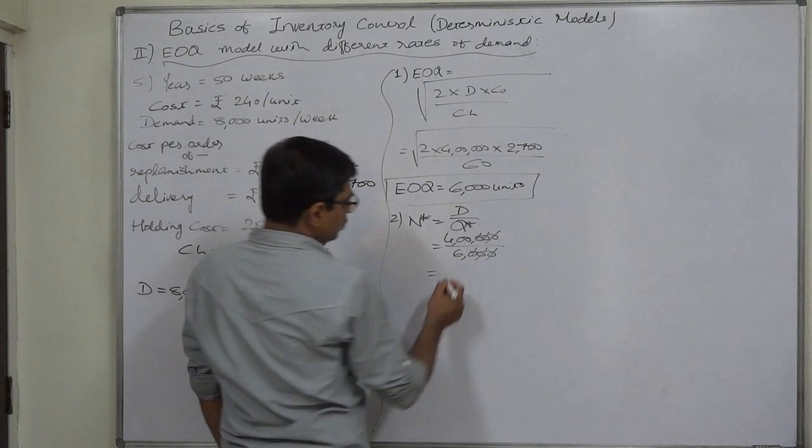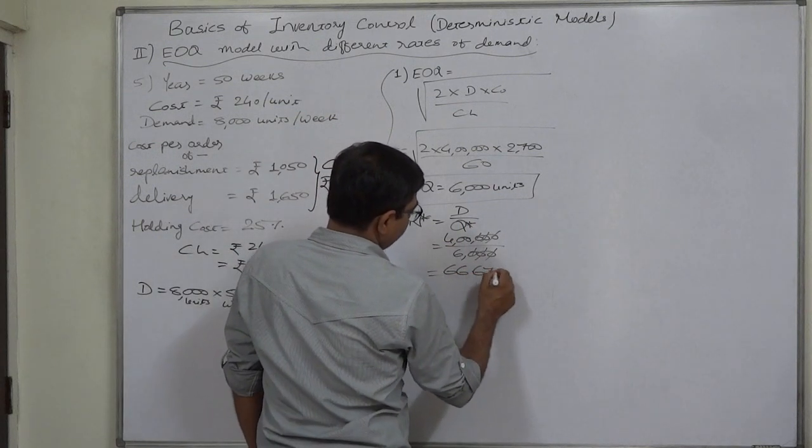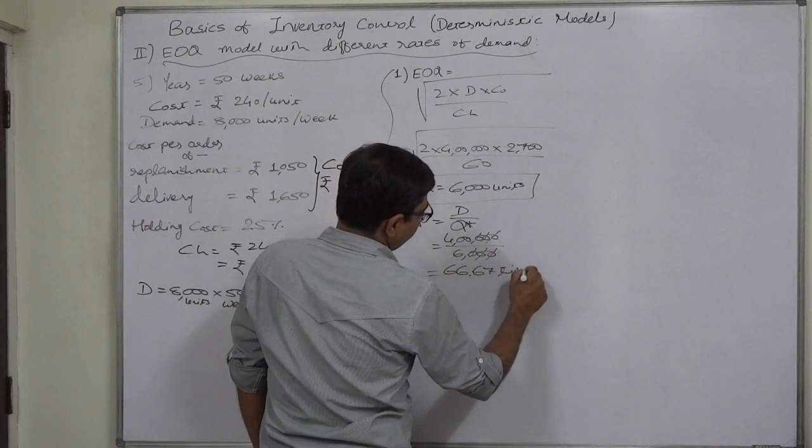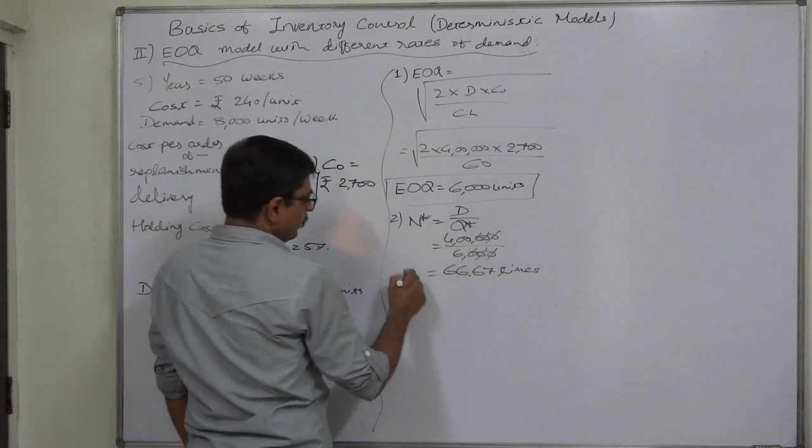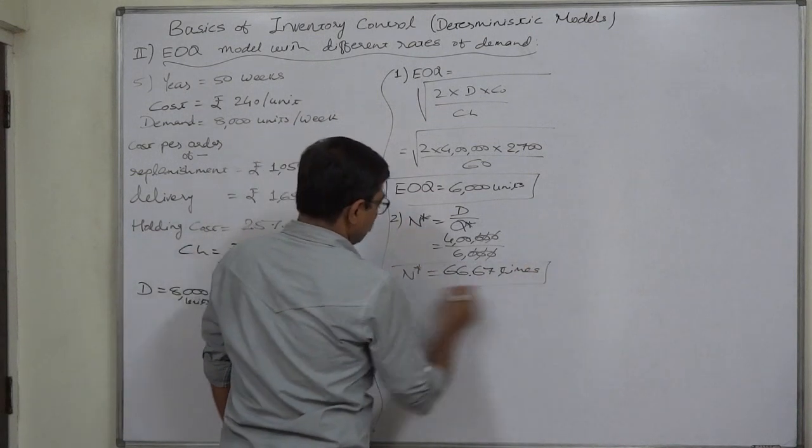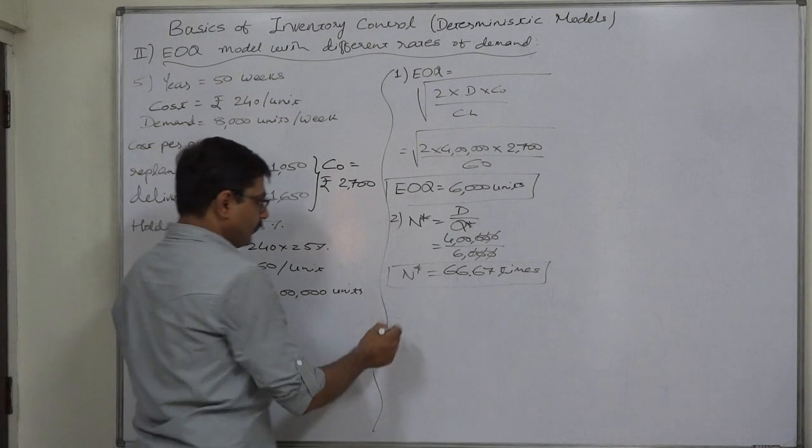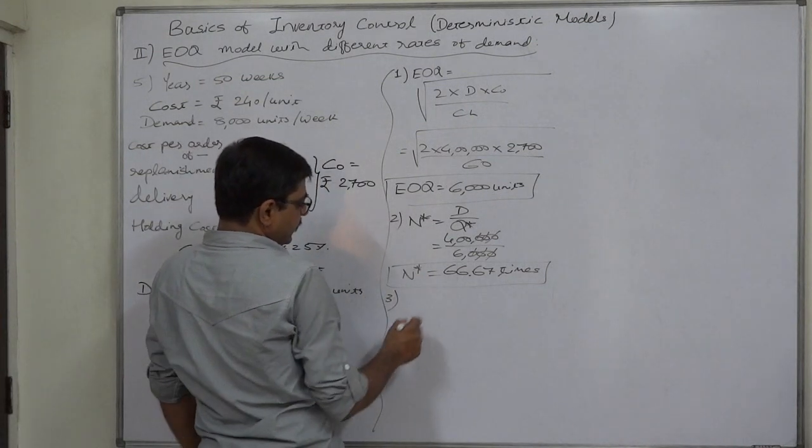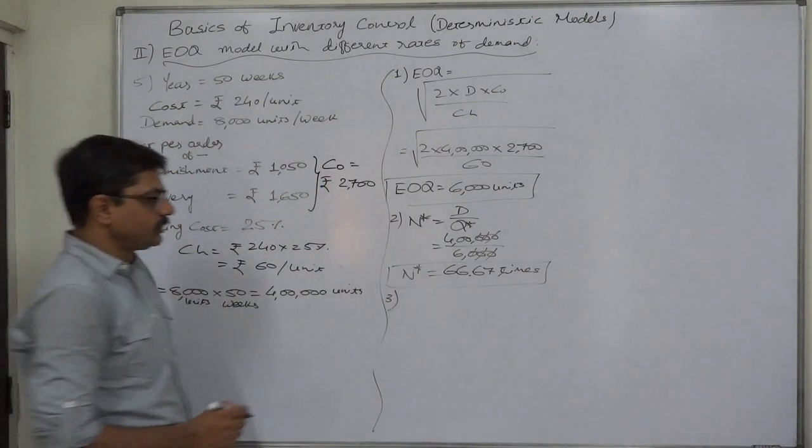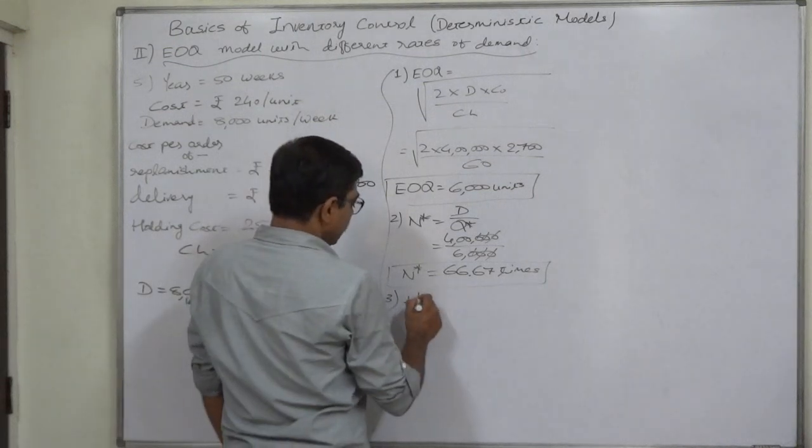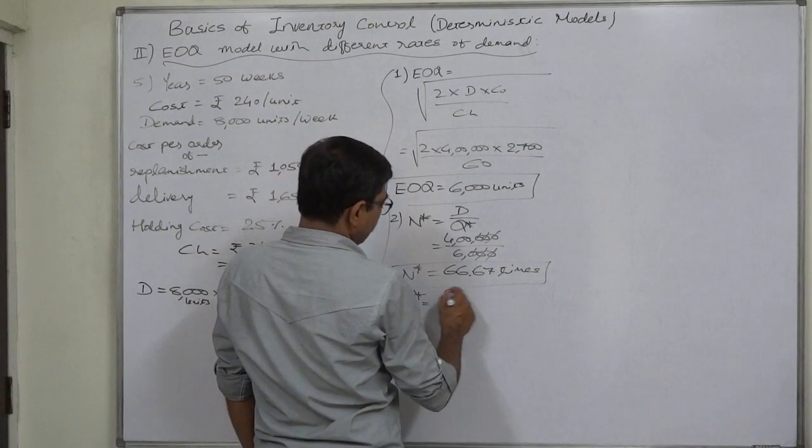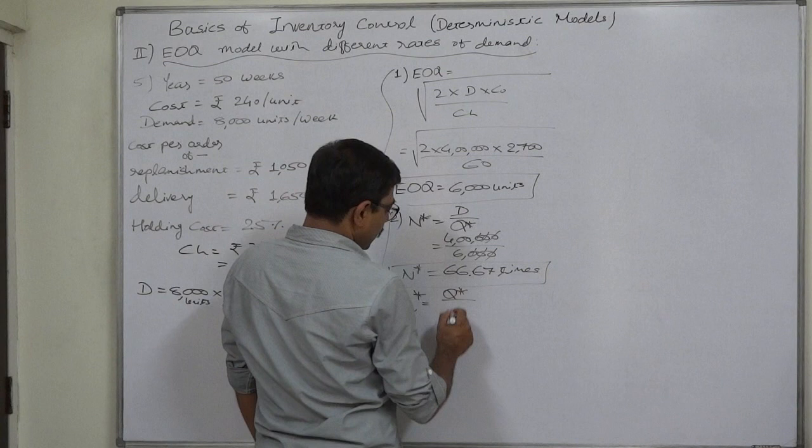Number 3 is gap between two consecutive orders, T star. We will calculate directly for number of weeks.